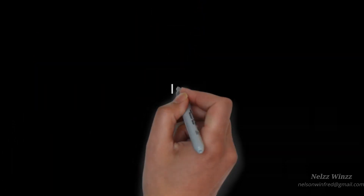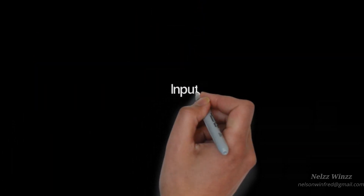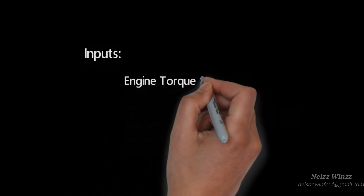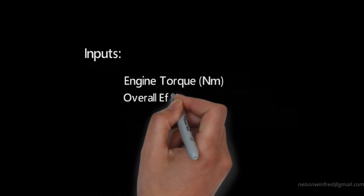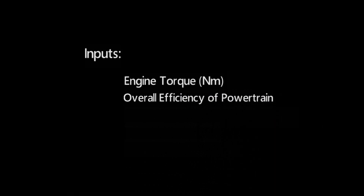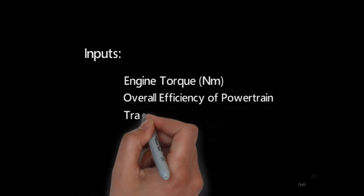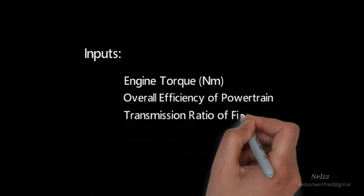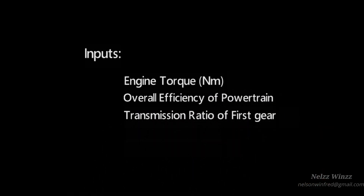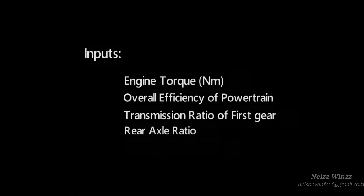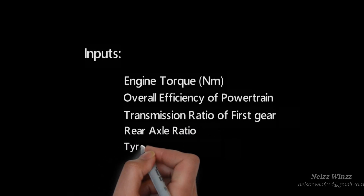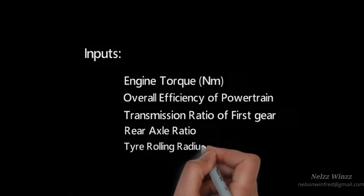Let's see the inputs needed to find the tractive force: engine maximum torque, overall efficiency of powertrain, transmission ratio of first gear, rear axle ratio, and tire rolling radius.